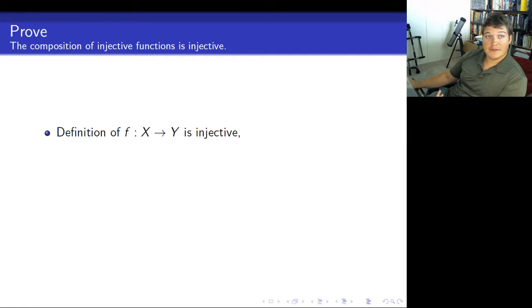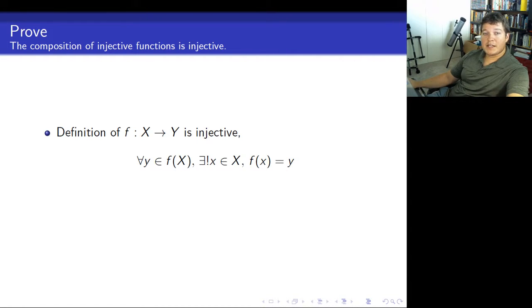We have the definition of injective and the definition of function. I'm assuming you know what a function is, but an injective function, if you have a function f from x to y, it's injective if for every y in the image in f of x, there exists a unique x in x such that f of x equals y. That means for each image of your function, there's a unique pre-image.